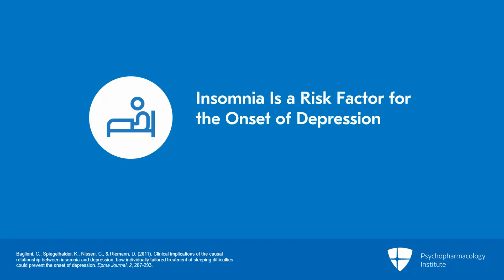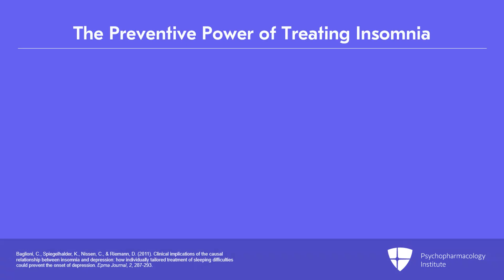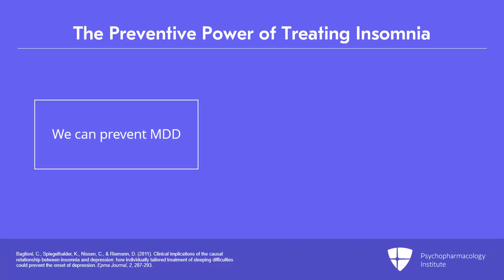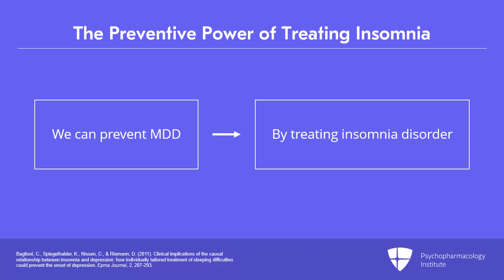Data from large prospective studies suggest that insomnia is a risk factor for the onset of depression. Based on meta-analytic studies, adult patients with insomnia are 2.6 times more likely to develop depression compared to those with good sleep. In adolescents, the risk of developing depression is four times higher in those with insomnia disorder. Insomnia being a risk factor for major depression gives us an opportunity for prevention of depression by optimally treating insomnia disorder.